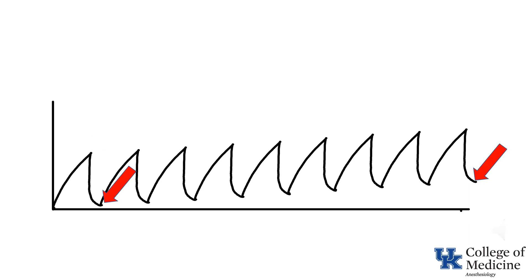Notice that not only is the peak inspiratory pressure increased, but PEEP is also increased. Think about the consequences of breath stacking. Assume that with a shortened expiratory time, exhalation is complete except for 10 mL. With a respiratory rate of 12 breaths per minute, that means every minute the volume remaining in the lungs at end-exhalation increases by 120 mL. Over the course of just 5 minutes, the lung volume at end-exhalation is increased by 600 mL.